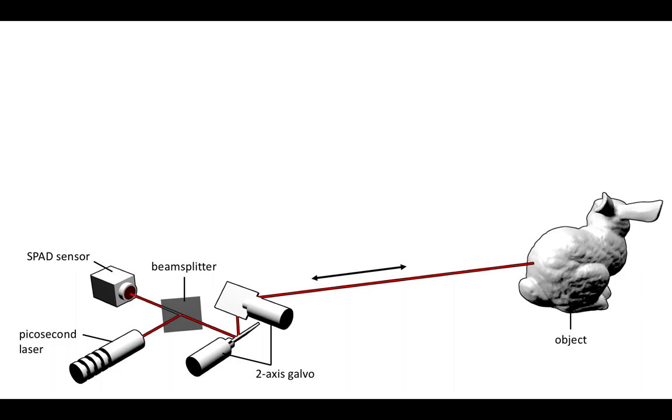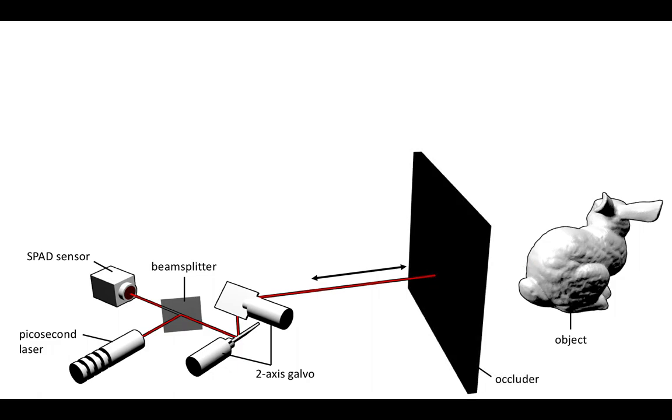However, this assumes the object can be observed directly, and these systems therefore fail when an occluder is in the way.